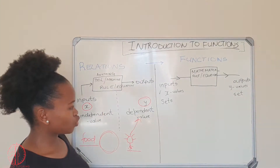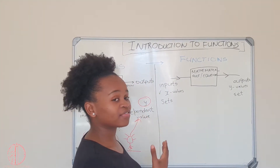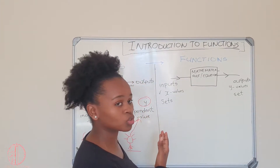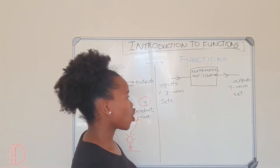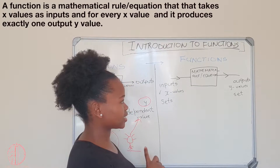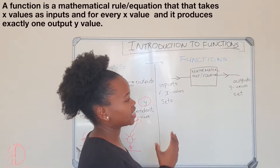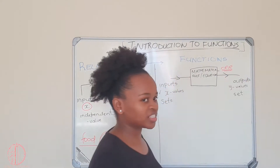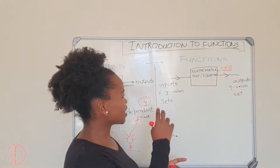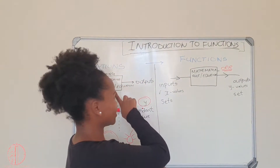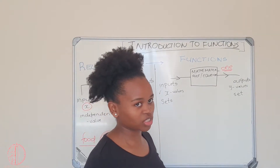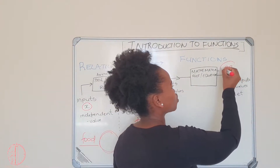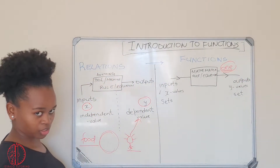Now we go to functions. A function is a relation as well — it's any mathematical tool, equation, or relationship that takes in input values and gives exactly one output value. We are extending the definition of a relation: whatever input you take, you have to have only one output. That's what differentiates a function from a relation.